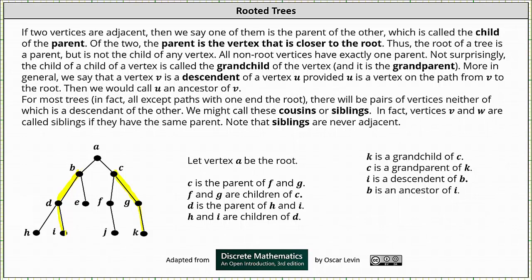In addition, since vertex b is on the path from vertex i back to the root, we can say that i is a descendant of b, and b is an ancestor of i. Similarly, we can say that k is a descendant of c, and c is an ancestor of k.